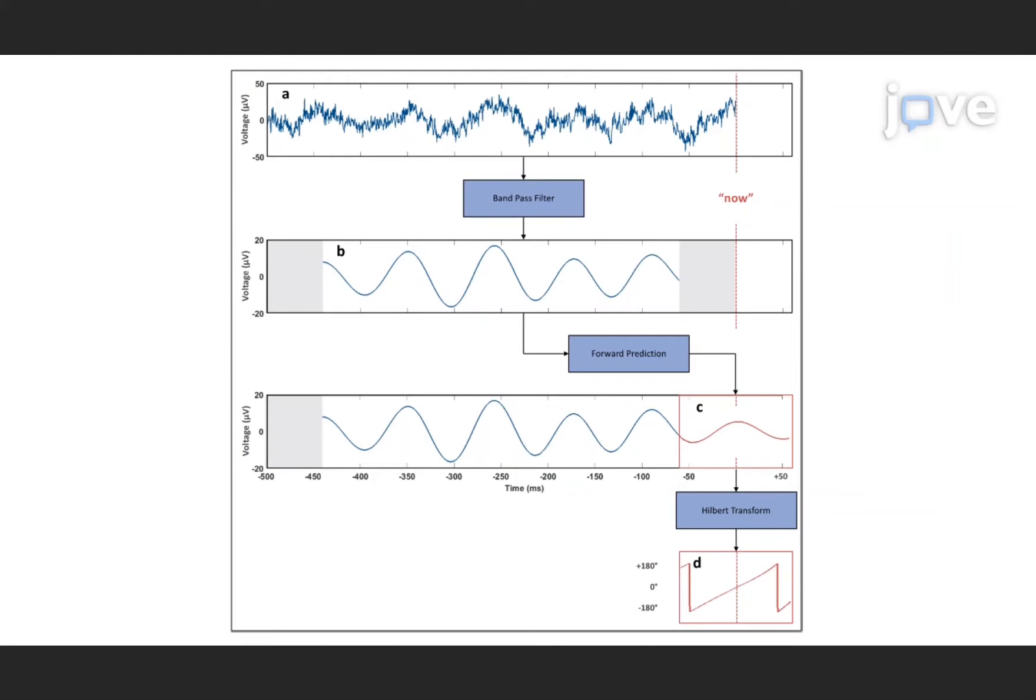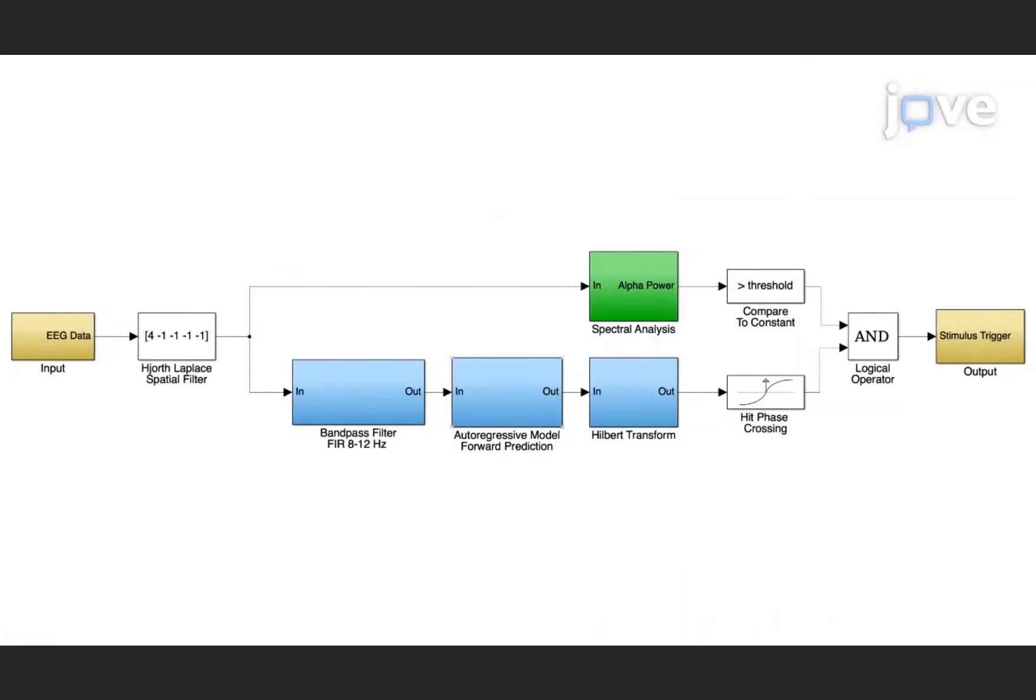The real-time device will perform spatial filtering to target the brain region of interest and bandpass filtering to isolate the oscillation of interest, estimating the instantaneous amplitude and phase using autoregressive forward prediction and the Hilbert transform. This signal is then compared to the trigger condition. If the power threshold and phase conditions are met, the stimulator is triggered.